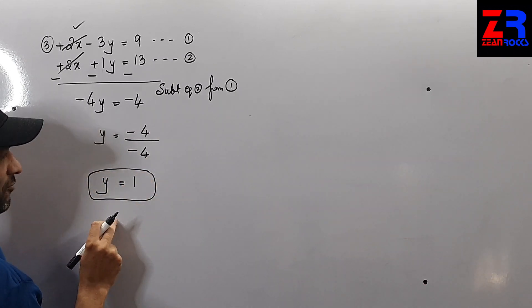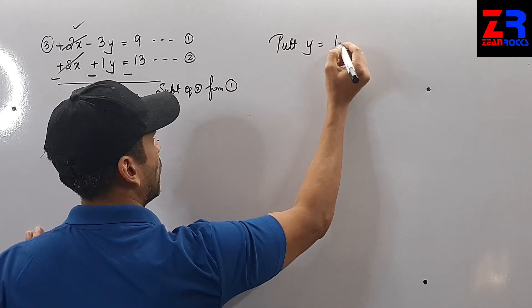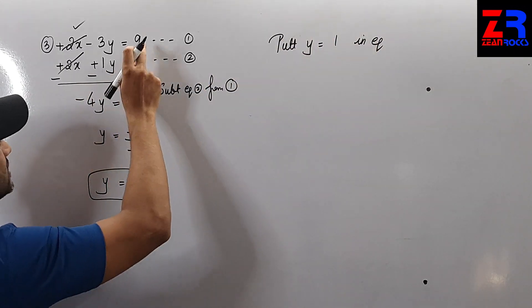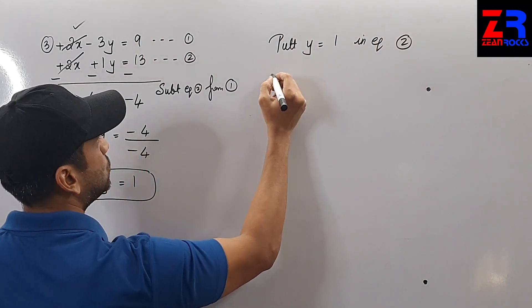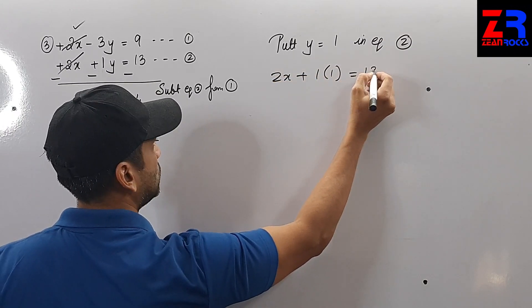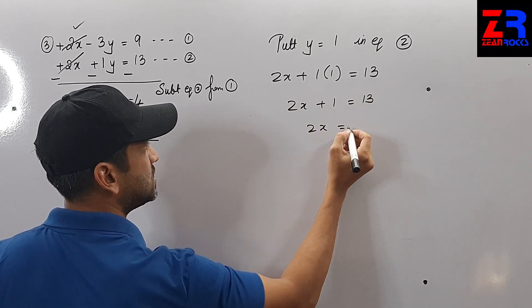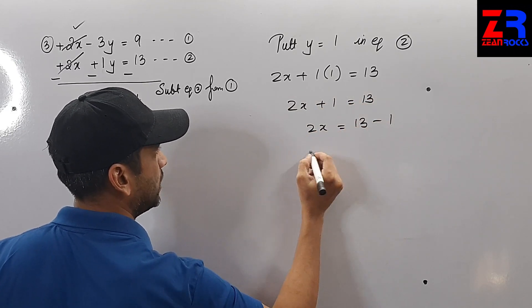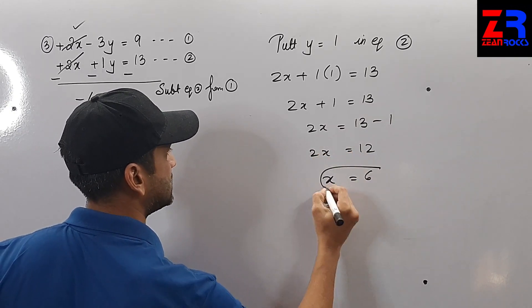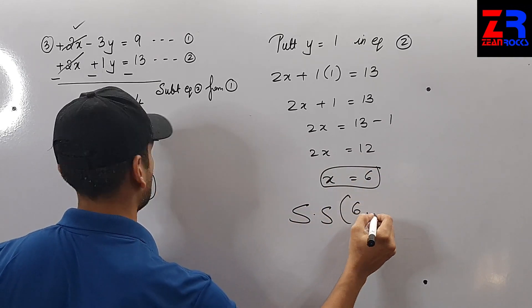I have got y = 1. Putting y = 1 in equation 2: 2x + 1(1) = 13, so 2x + 1 = 13, therefore 2x = 12, x = 6. The solution set is (6, 1).